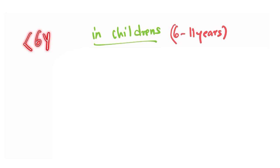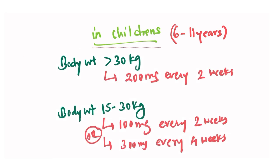In children it is given as per body weight. If the body weight of the child is more than 30 kg then the dose is 200 mg every two weeks. And if the body weight is between 15 to 30 kg then the dose is 100 mg every two weeks or 300 mg every four weeks.